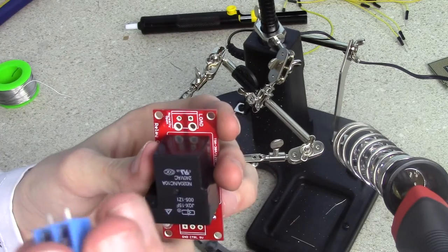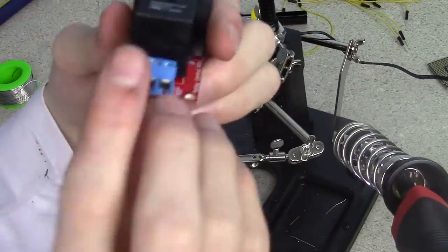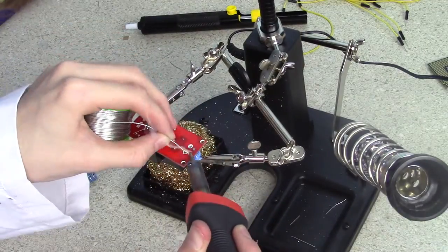After that, solder the two pinned blue thing, I believe it's called a terminal, into place at the top of the board. However, make sure the holes are facing outward before you do so.